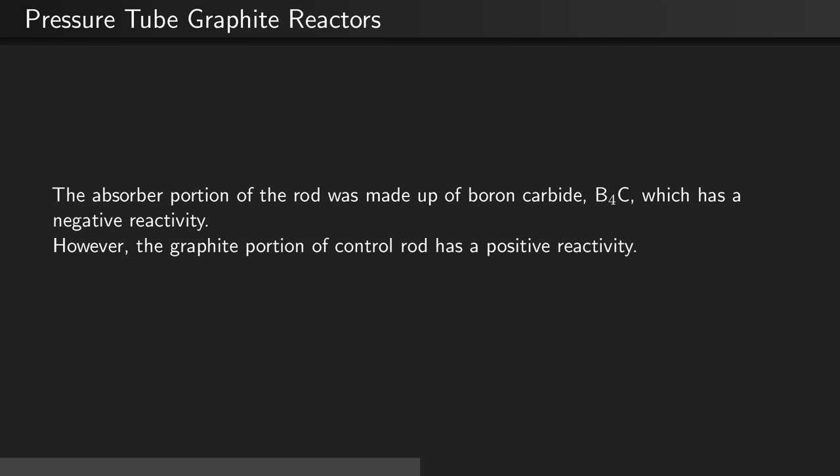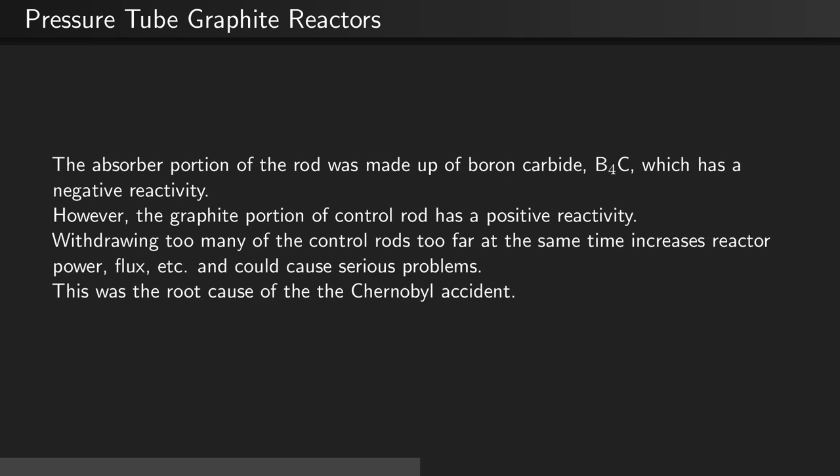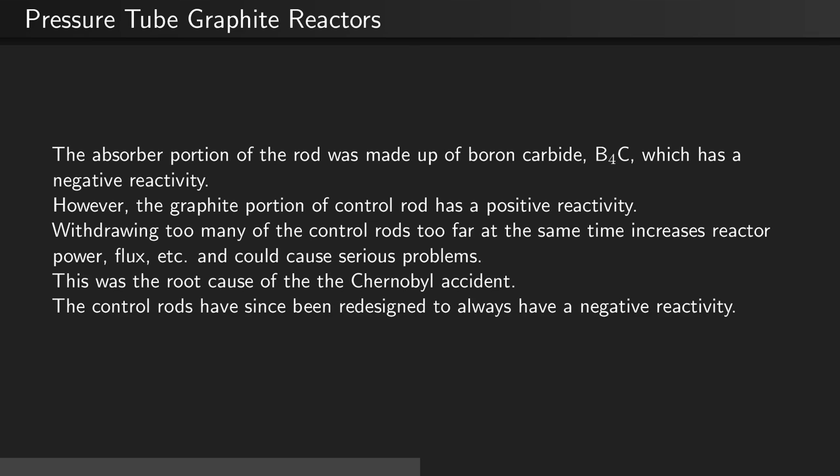However, the graphite portion of the control rod has a positive reactivity. Withdrawing too many of the control rods too far at the same time increases the reactor power, flux, etc., and could cause serious problems. This was the root cause of the Chernobyl accident. The control rods have since been redesigned to always have a negative reactivity.